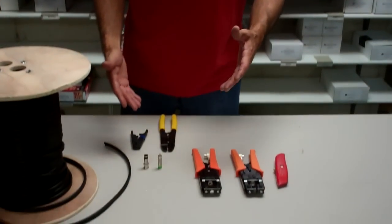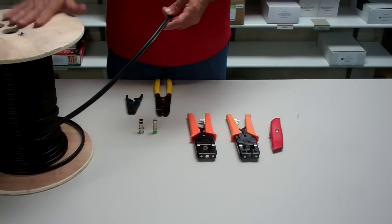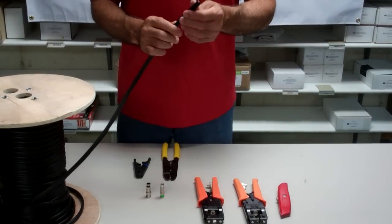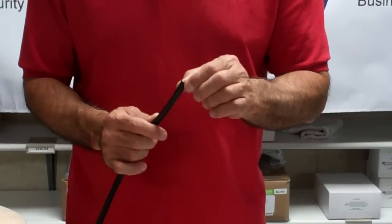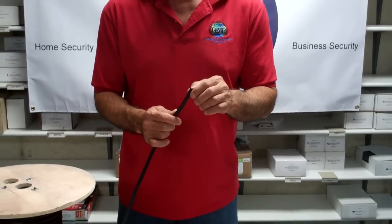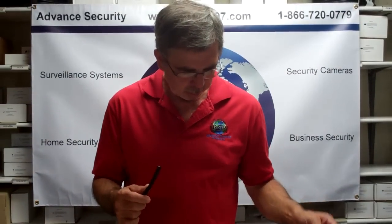Down here on the table you'll see a roll of Siamese. Siamese basically is a RG59 with 18 gauge for the power. Two wire 18 gauge.